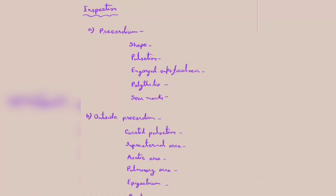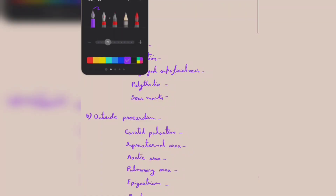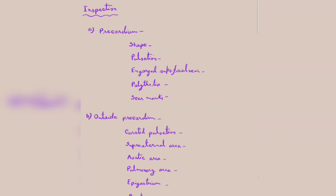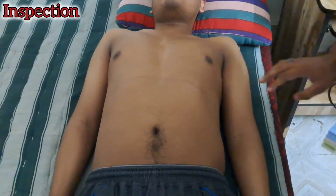In the inspection part we have two main divisions: precordium and outside the precordium. In the precordium, we inspect the shape, pulsation, engorged superficial veins, polythelia, and scar marks. Outside the precordium, we check whether any other pulsation is present. We start by exposing the patient and then begin inspection.